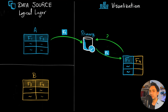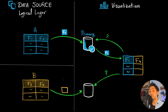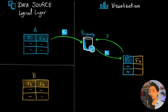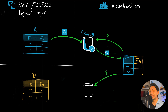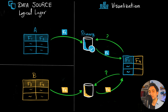Sometimes you are in a situation where you want to get data from another data source. For example, we have another data source with table B and we want the visualization to show the data of F4. Tableau is going to send another query to the second data source to get the data of F4, and then the data can be forwarded to the visualization. Tableau calls this a secondary data source and marks it with an orange icon.